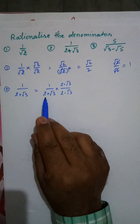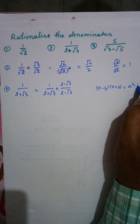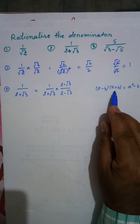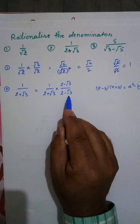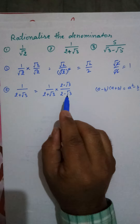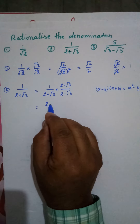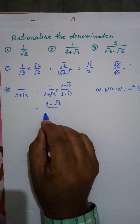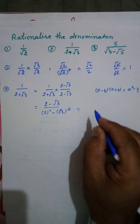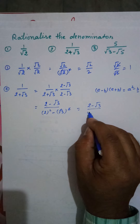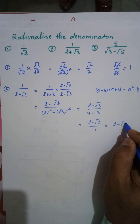We do this according to the third algebraic identity: (a - b)(a + b) = a² - b². When we multiply the same numbers with different signs, it becomes a² - b². Here b is √3, so b² = (√3)² = 3, and the square root cancels. Using this identity, a is 2, so we get 2² minus (√3)², which is 4 minus 3 = 1. The answer is (2 - √3) over 1, which equals 2 - √3.